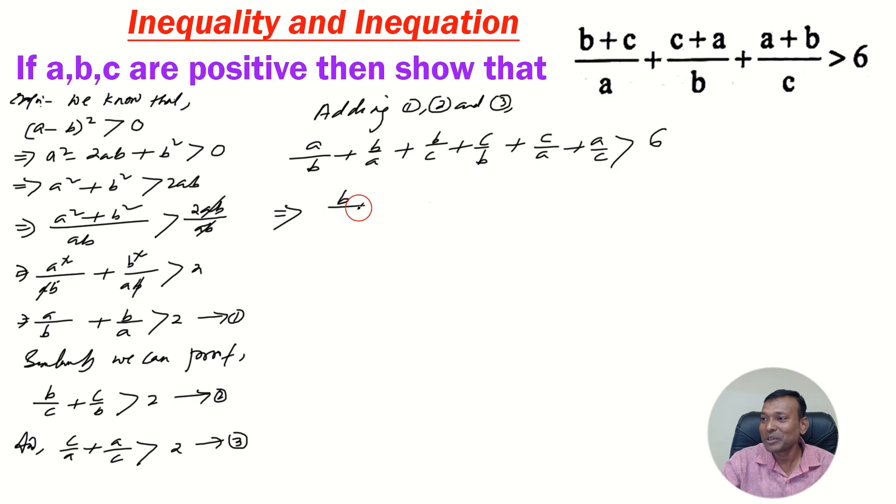This is b by a and c by a. So, first of all, b by a plus c by a. After that, write the fractions with b denominator: a by b plus c by b. Then comes c. The remaining are b by c and a by c, greater than 6.